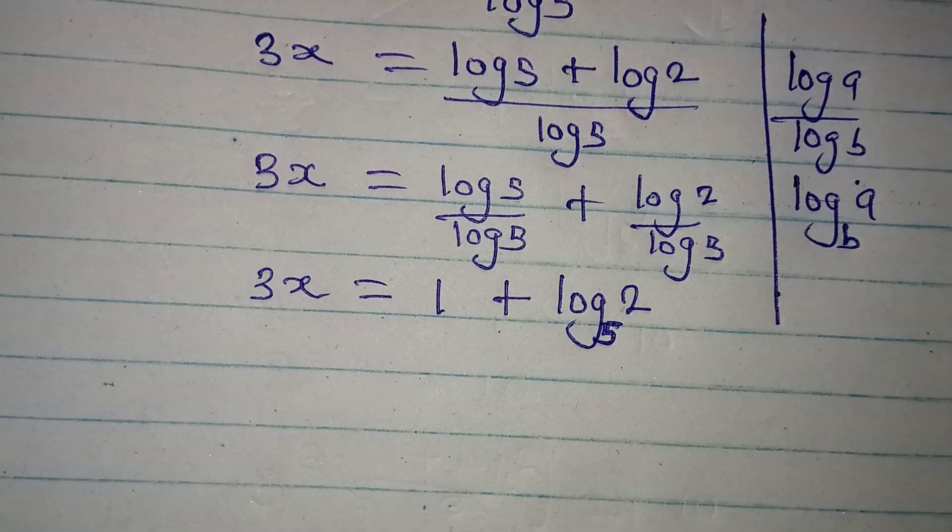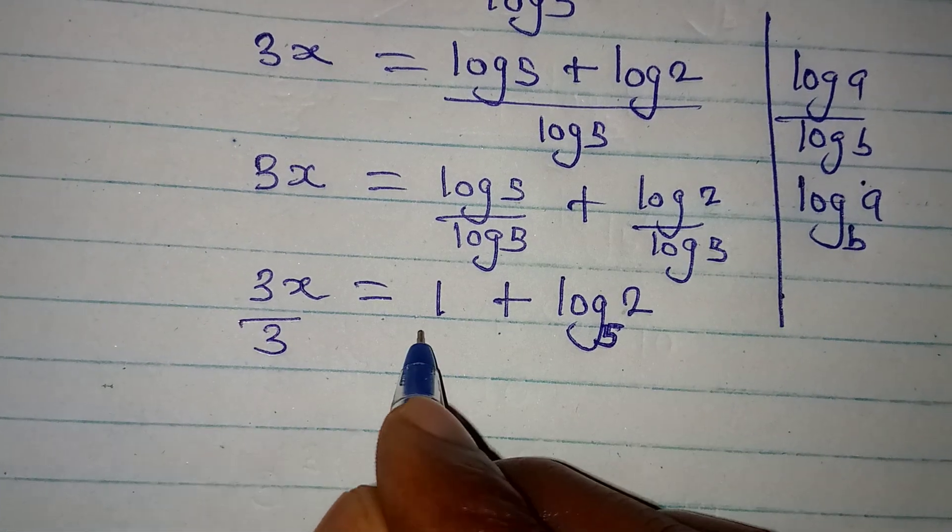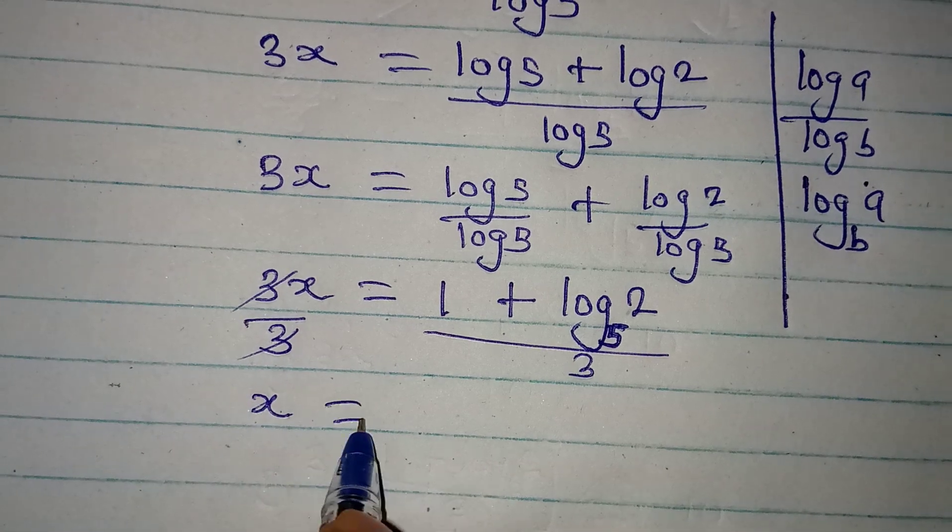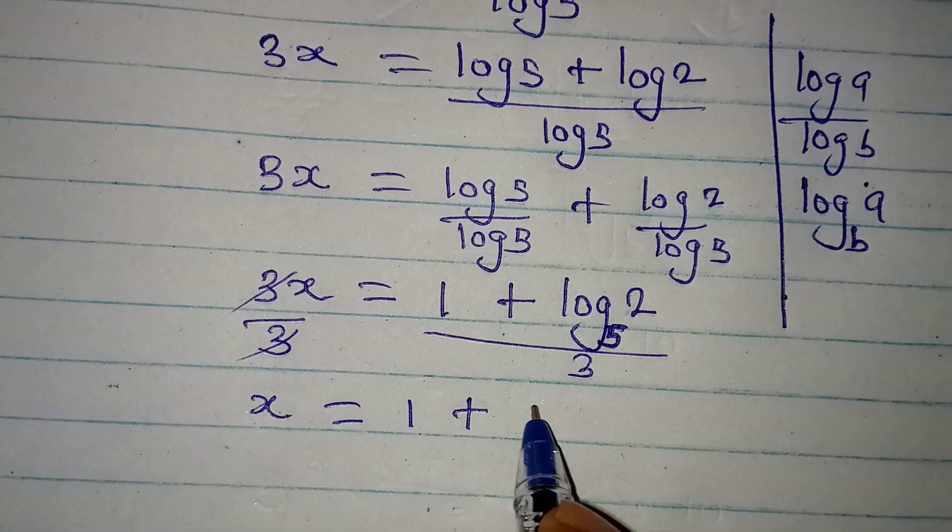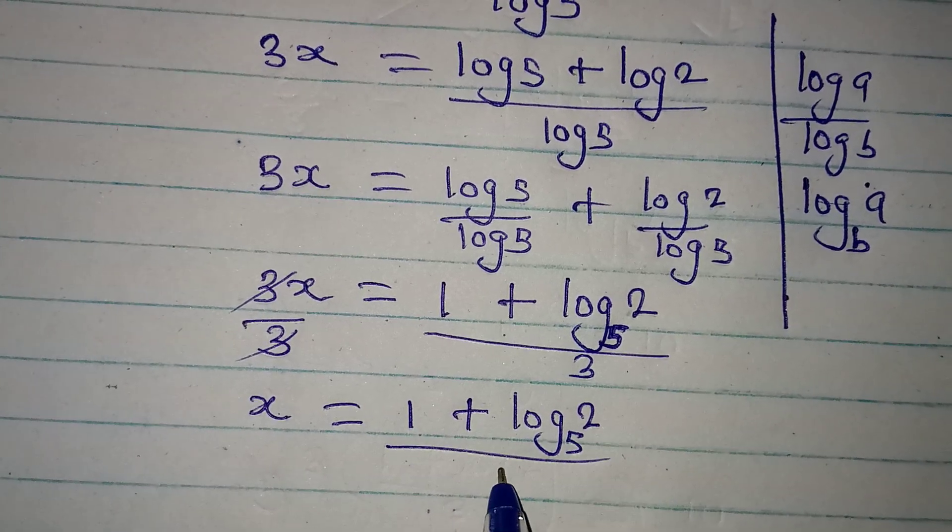Divide both sides by 3, because we are looking for x. Divide the whole of this by 3. This cancels this. And our x is 1 plus log 2 to base 5. And the whole of this is over 3.